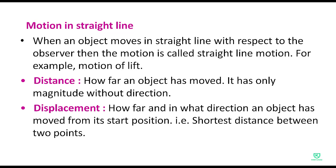Distance — how far an object has moved. Distance hota hai kitni door tak object ne move kiya, ya kitna usne movement show ki hai. Distance ka sirf magnitude hota hai, koi bhi direction nahi hota, toh distance ek scalar quantity hai. Quantities do type ki hoti hain — scalar quantity, jisme sirf magnitude hota hai, aur vector quantity, jisme magnitude ke saath direction bhi hota hai.